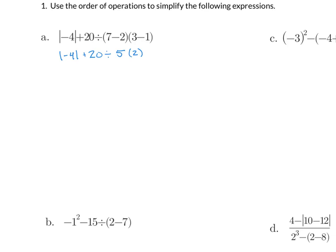Now recall: absolute value falls under the category of exponents. So I'm going to go ahead and evaluate my absolute value. Remember absolute value are those vertical bars around a number — it's the distance from zero, so when we calculate absolute value we just remove the sign. So we get 4 plus 20 divided by 5 times 2.